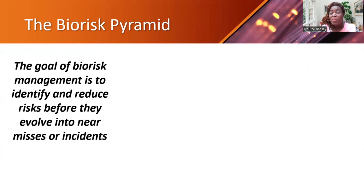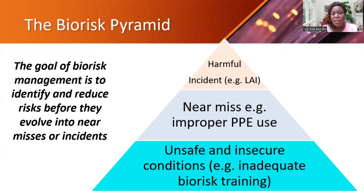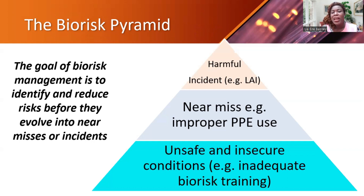Let's look at the bio risk management pyramid. The goal of bio risk management is to identify and reduce risk before they evolve into near misses or incidents. The pyramid has unsafe and insecure conditions at the bottom, then near misses such as improper use of PPE, and then harmful incidents like laboratory-associated infections at the top.